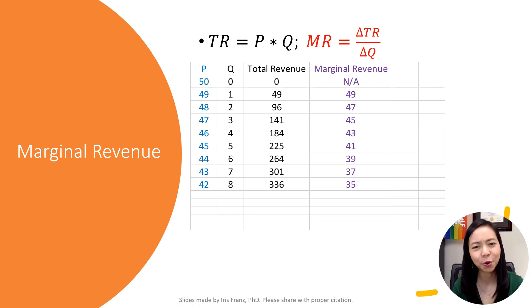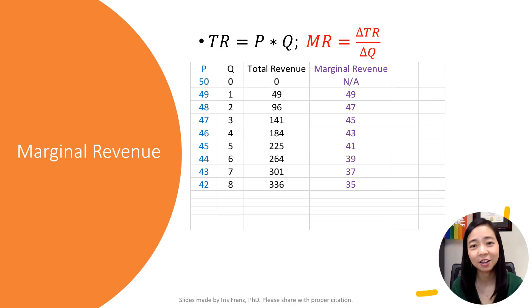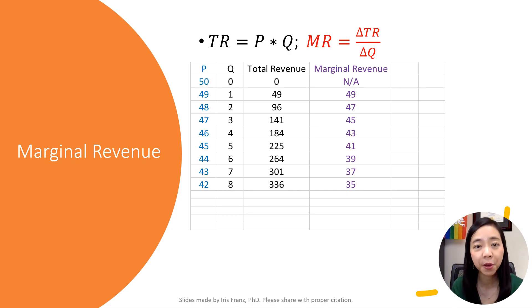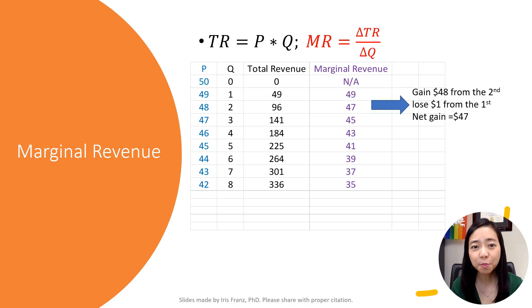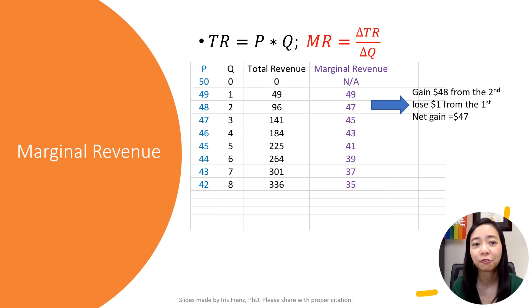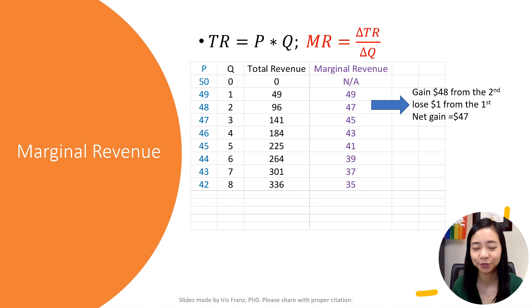Why is marginal revenue always lower than the price except for the first unit? When the price drops from $49 to $48, the monopolist will have to lower the price for both the first and the second unit, not just the second unit. Therefore, while your marginal revenue goes up from the sale of the second unit, your marginal revenue also goes down from cutting the price by $1 from the first unit. Therefore, the net gain is $48 minus $1, which gives you $47.